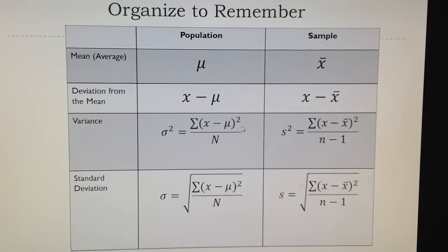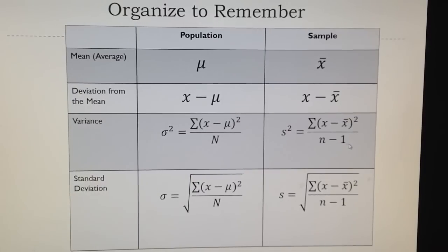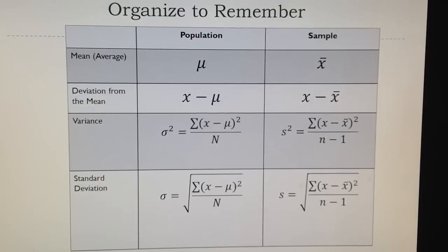You square all deviations because the sum of deviations is always zero, so finding the average deviation would always be zero. We square all deviations, add them, and divide by the total number of cases — this is the variance. For a sample, we divide by n minus 1, which is a correction for the fact that when we select fewer cases, we miss a little bit of the variability in our distribution.